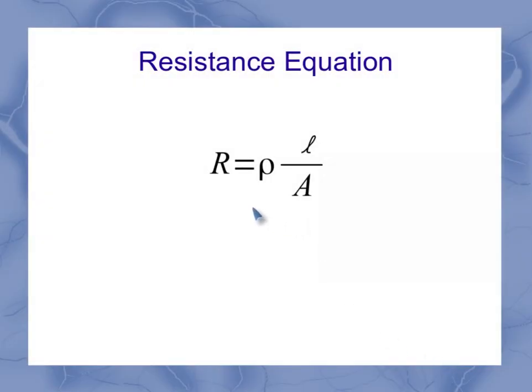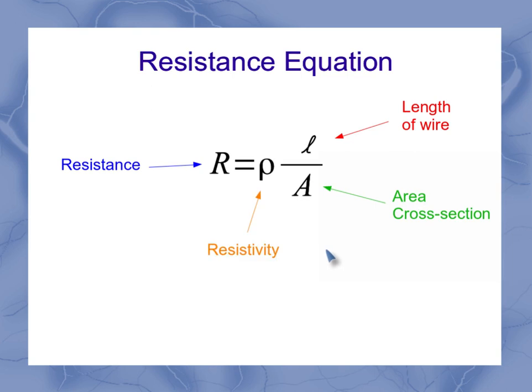So let's take a better look at this equation. Capital R is resistance. The L was my length of wire, and the A was my cross-sectional area of that wire. And this rho is our resistivity.